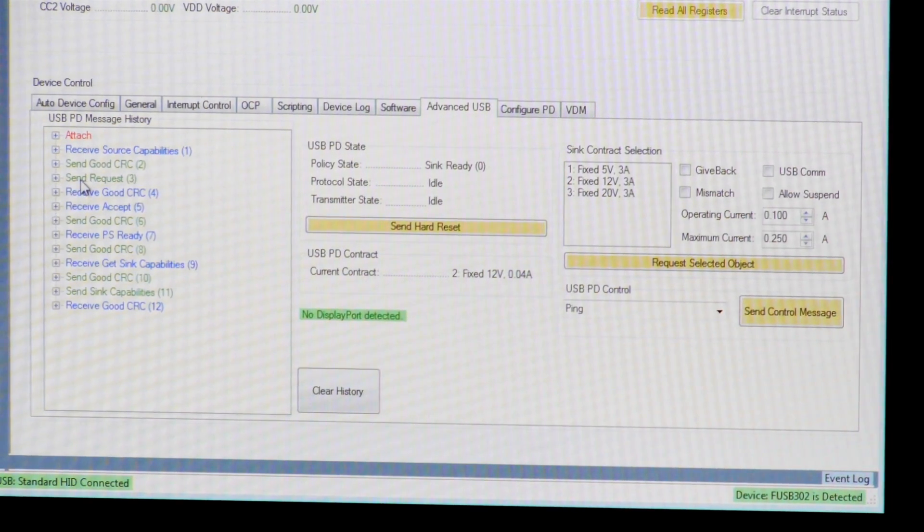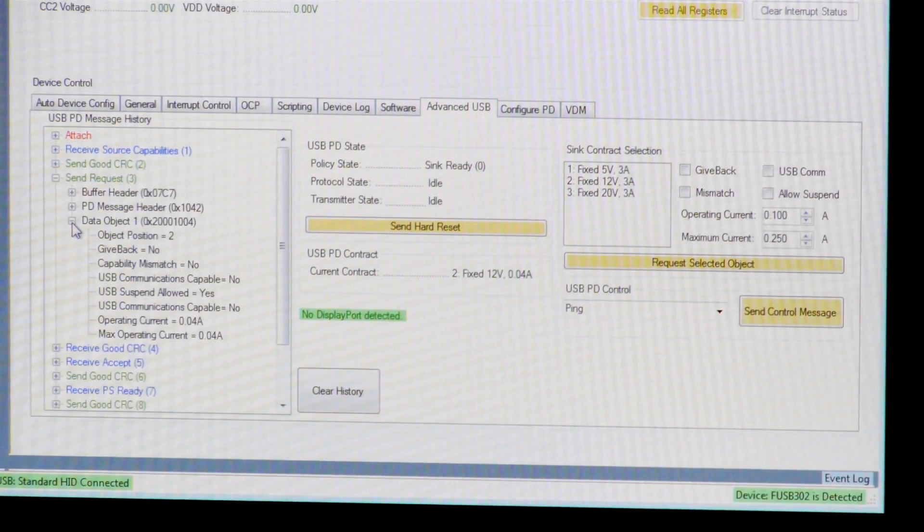The second thing that happens is the sink, in this case the FUSB302, requests which capability it would like to have. For this insertion, we selected the second capability, which is 12 volts.